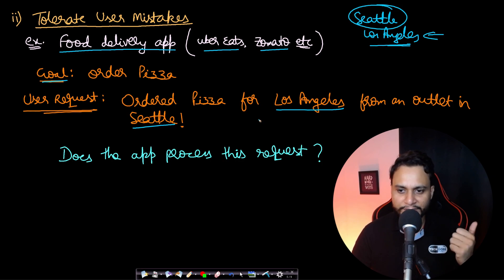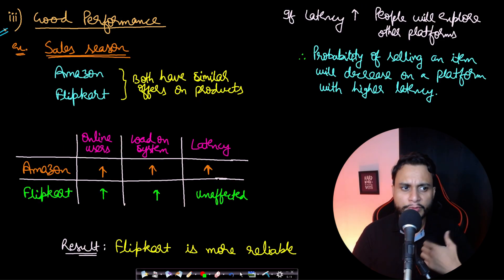If your order gets processed, this is a huge mistake from the food delivery app. If your order doesn't get processed because you are too far away from the outlet, then your application can be said to be tolerating user mistakes.